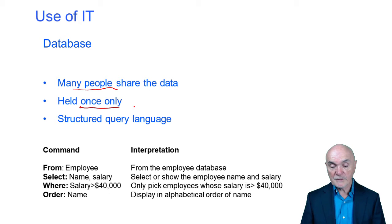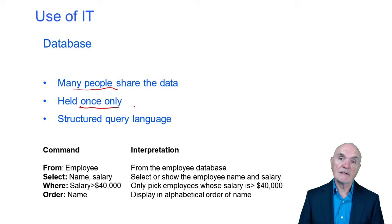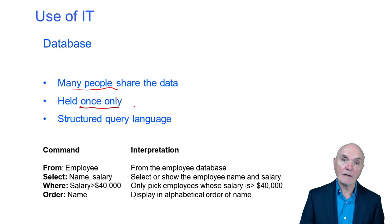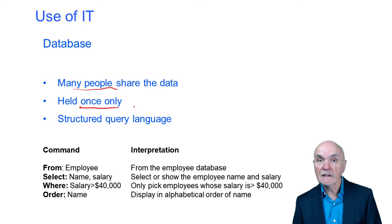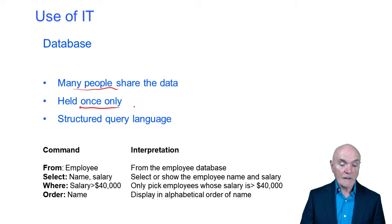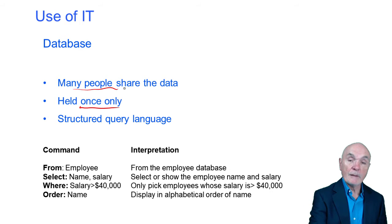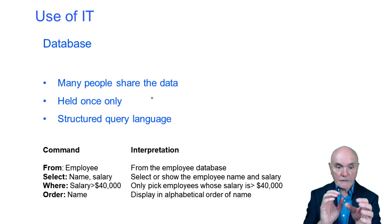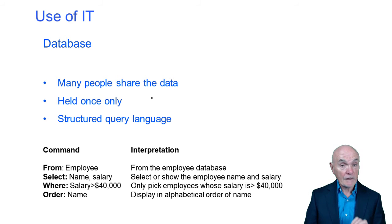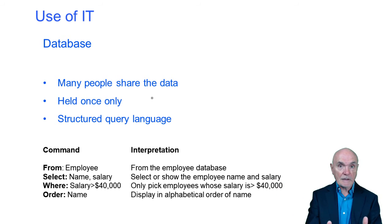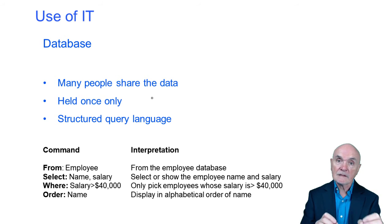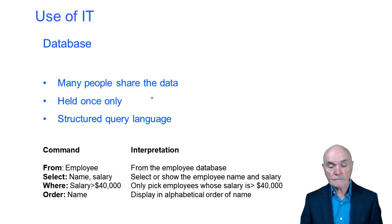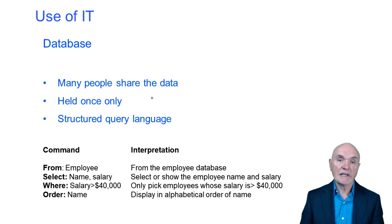Under old file management systems, the personnel department would keep a copy of the employee's personnel records including their salary, and then in a completely different file, wages and salaries would keep a record of their salary again. The problem is if somebody's salary changes, you have to remember to change it in every file it occurs in, and for a while people may be seeing different versions of what the salary is. In a database, the data is centralised and everybody is given a sub-view of the data, creating consistency with much less bother in updating it.